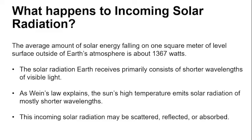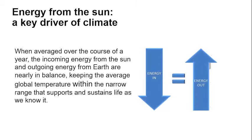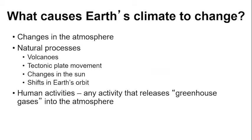The energy processes that happen on the Earth and in the atmosphere are either a result of scattering, reflection, or absorption of the energy that comes from the sun. It is important that the energy coming in from the sun must equal the energy the Earth is giving up. The Earth must not become warmer and warmer with time — the incoming energy from the sun and the outgoing energy must be in balance.